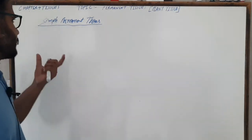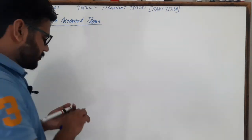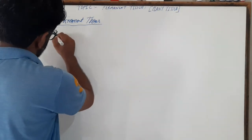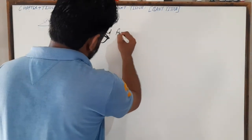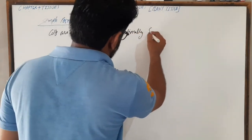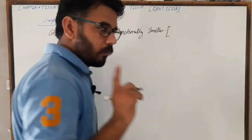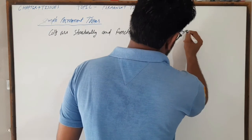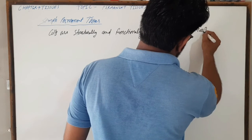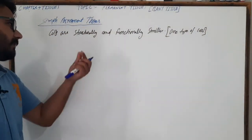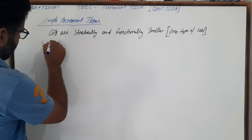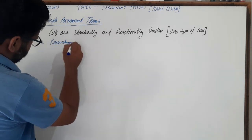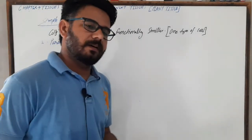Simple permanent tissue means cells are structurally and functionally similar — one type of cells. Simple permanent tissue is divided into three types: the first one is parenchyma, the second one is colenchyma, and the third one is sclerenchyma.